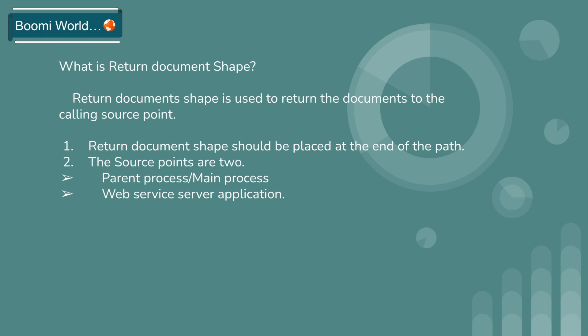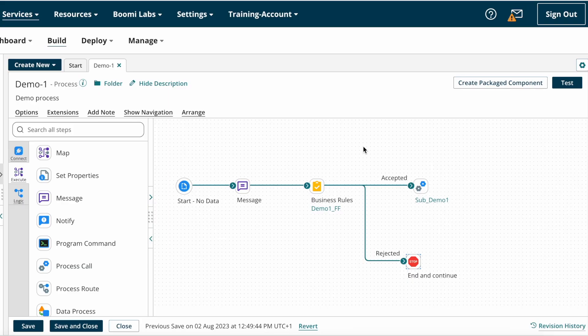The source points are of two types: either it should be a parent process or main process, and a web service server application. Suppose as per your requirement you have implemented one Process Call shape, and after that you want to implement some more logic. In that case you want to get the final output of the Process Call shape, so you can use the Return Document shape at the end of the Process Call shape so that the final result will return to the main process. Similarly, if you are dealing with a web service server application and want to return the final result to the client, you can use the Return Document shape.